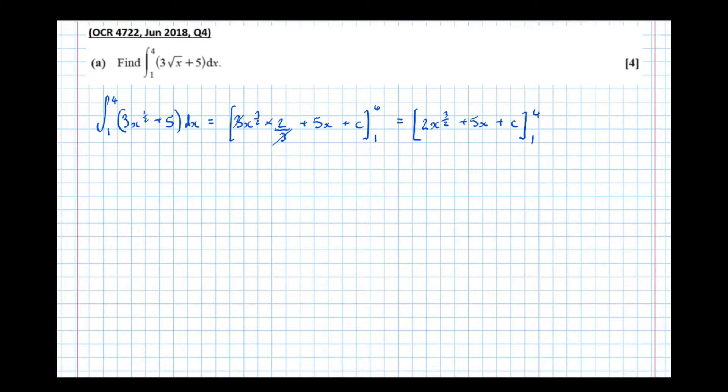So subbing in the top limit first, subbing in the 4, we get 2 lots of 4 to the 3 over 2, plus 5 lots of 4, plus c.